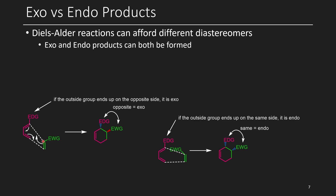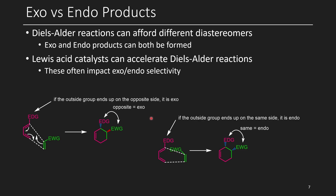Because the electron-withdrawing group is pointed out, we get the exo product, and the electron-withdrawing group and electron-donating group are on different sides of the cyclohexene ring. If instead the dienophile approaches with the electron-withdrawing group pointed towards the diene, you'll end up with the two substituents on the same side — this is endo. You can think of endo as the substituents being on the same end of the cyclohexene ring. Often you can change selectivity between exo and endo by using a Lewis acid, which can also enhance the rates, although depending on how sensitive your diene or dienophile is, some functional groups might not tolerate harsh conditions.